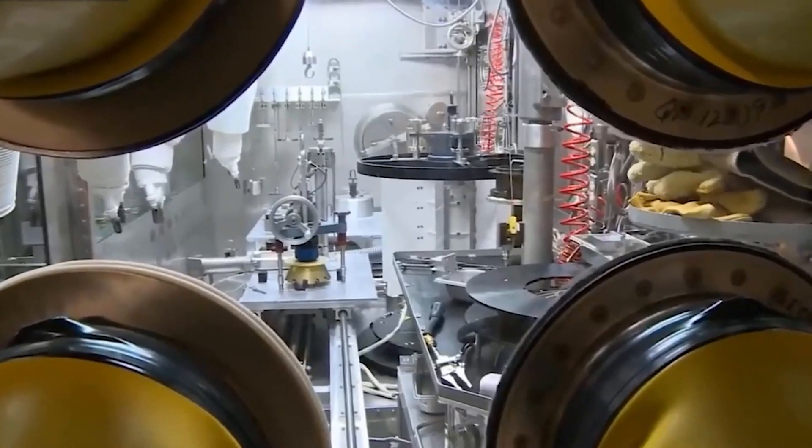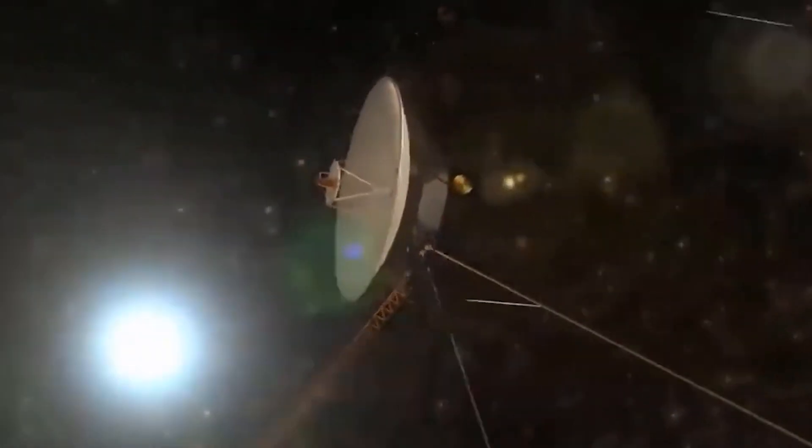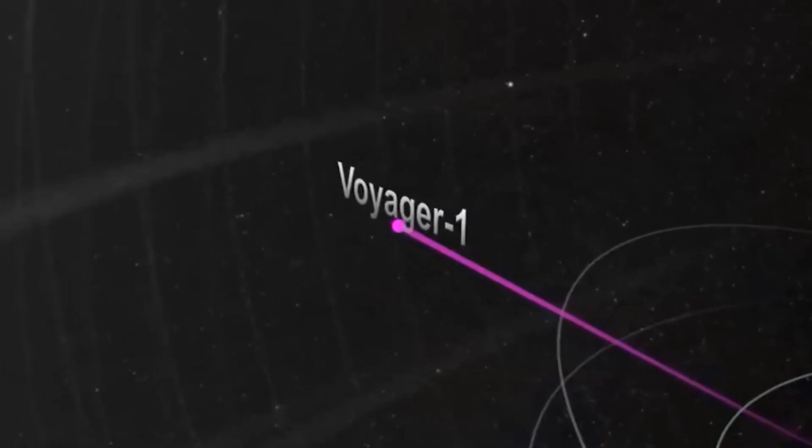Voyager 1 is the most distant human-made object, about 11 billion miles, 18 billion kilometers away from the Sun. The signal from Voyager 1 takes approximately 17 hours to travel to Earth.